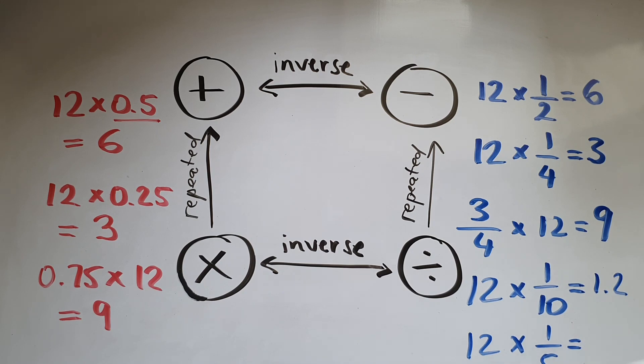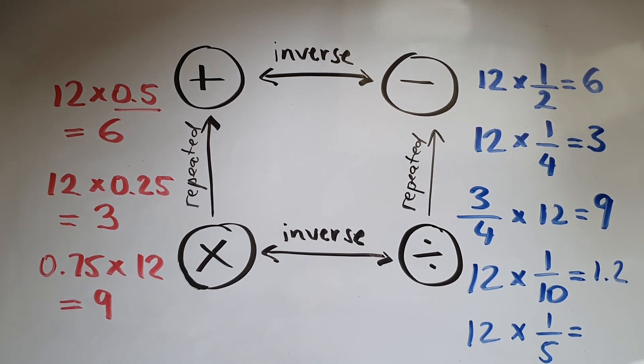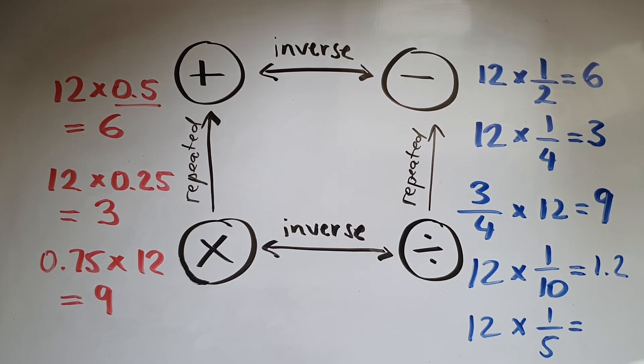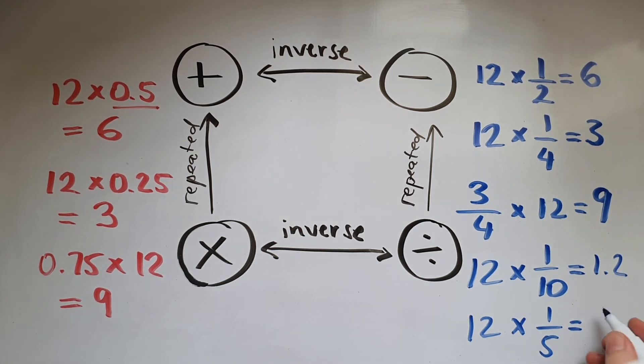And that means the same as dividing 12 by 5. Or working out 20 percent of this. So that gives me 2.4.